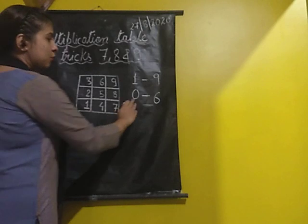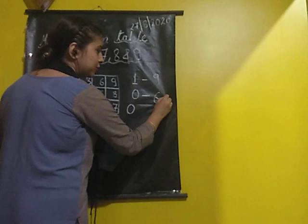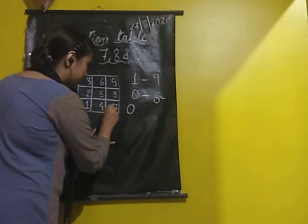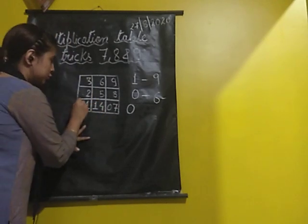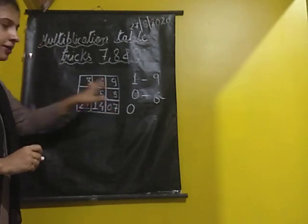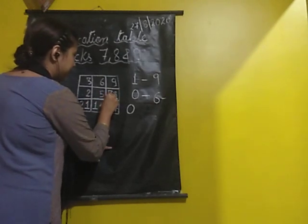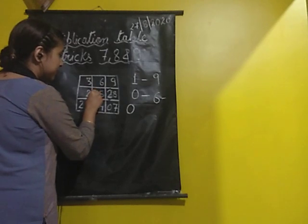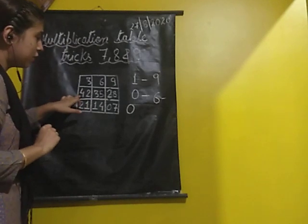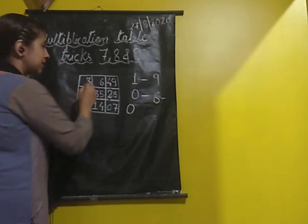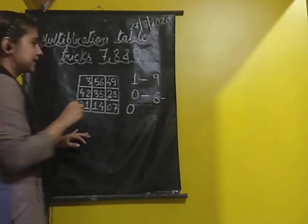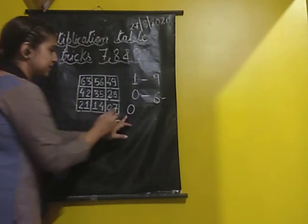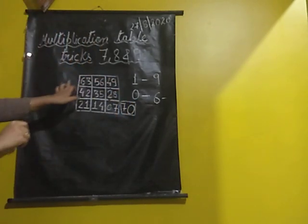Now, next step: we will place the digits 0 to 6 in the tens place. We have to repeat certain numbers. Let's begin with 0, 1, and then 2 — we repeat 2 again. After 2: 3, 4 — we repeat 4 again. Then 5 and 6. This 6 we are not going to repeat because there is no more box. And what comes after 6? 7. So here we have the table of 7.